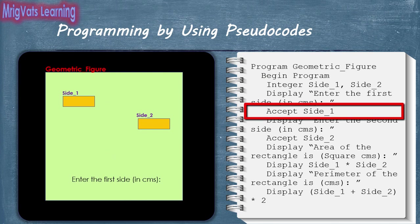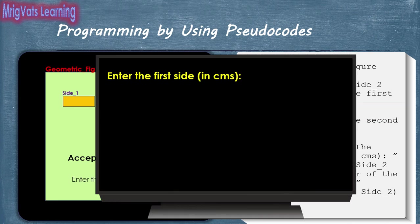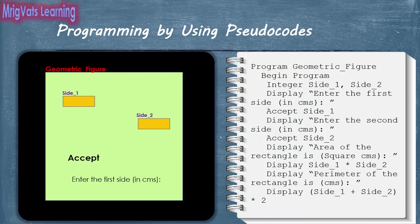When the accept statement is run, it waits for the user to input a number. As soon as the user enters a value, for example 29, the accept statement takes it as input and stores the value in the Side1 variable within the memory block reserved for the program. The memory associated with the accept statement is then released for other statements of the program.